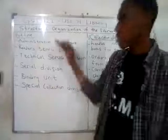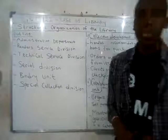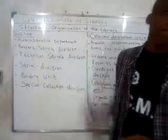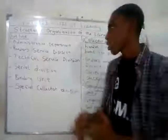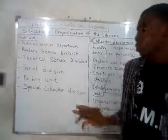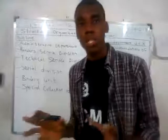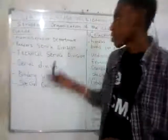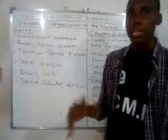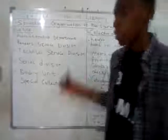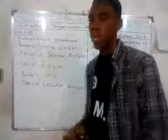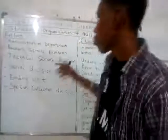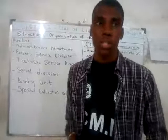Based on the structural organization, the library has six units. We talked about the Administrative Department, where the chief librarian resides and supervises all activities. We talked about the Reader Service Division, divided into three units: Circulation, Reference, and Cultural units. The Technical Service Division is divided into two: Cataloging and Collection Development. We also talked about the Serial Division, the Bindery Unit for repairs, and the Special Collections. No library exists without an organization.